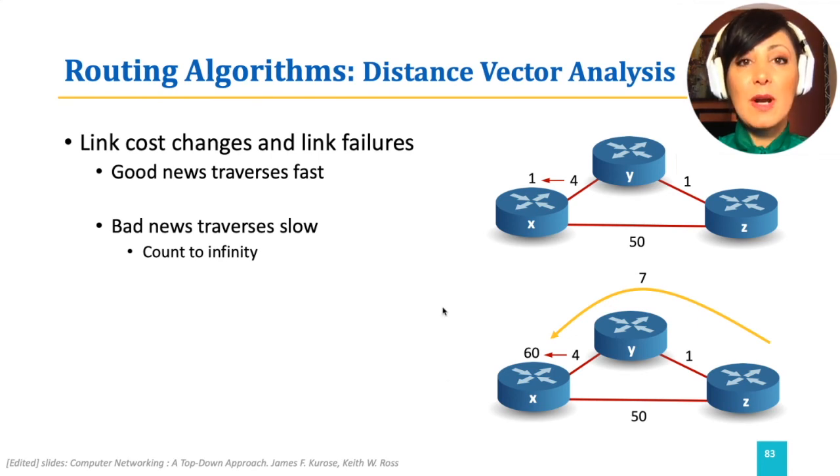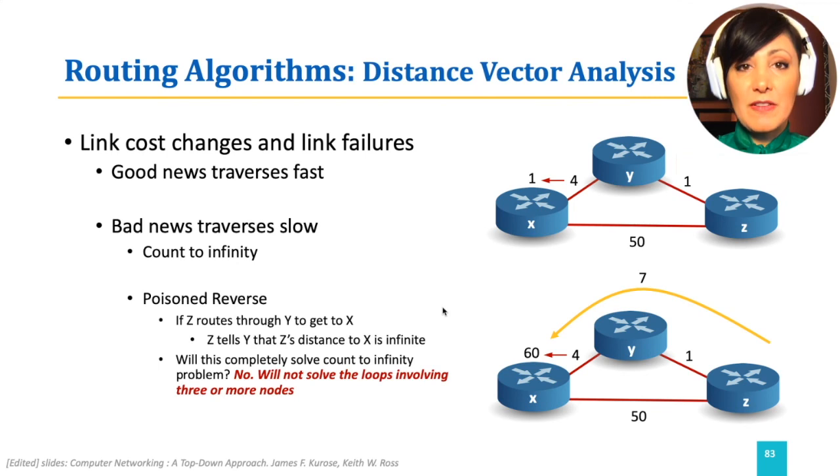One solution to this problem is Poisoned Reverse, which means that when a node path to another node is through a neighbor, the distance to that node to the neighbor is announced as infinity. For example, since Z reaches X through Y, it advertises its path cost of reaching X to neighbor Y as infinity. Will this completely solve the count to infinity problem?